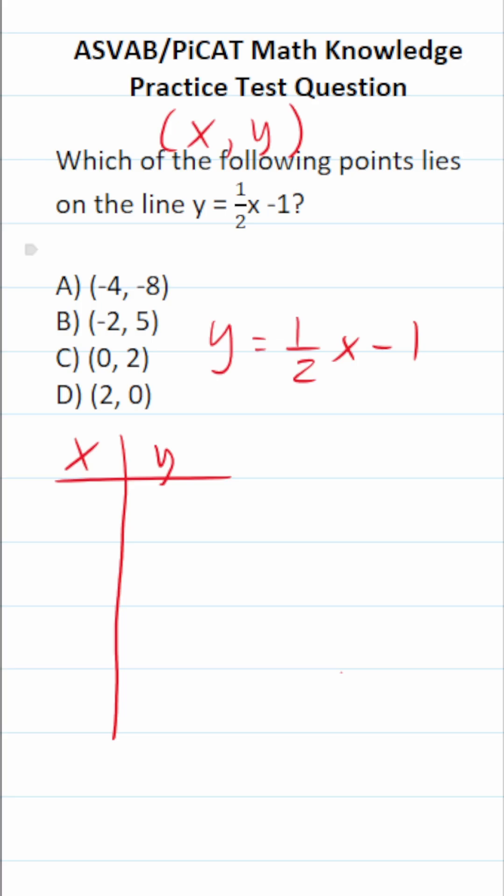More specifically, we know that all of these are x values. This is negative 4, this is negative 2, this is 0, and this is 2. The way we're going to check is we're going to take an x, plug it into our equation, and see what we get for y as our output. That will tell us if the point is in fact on the line.